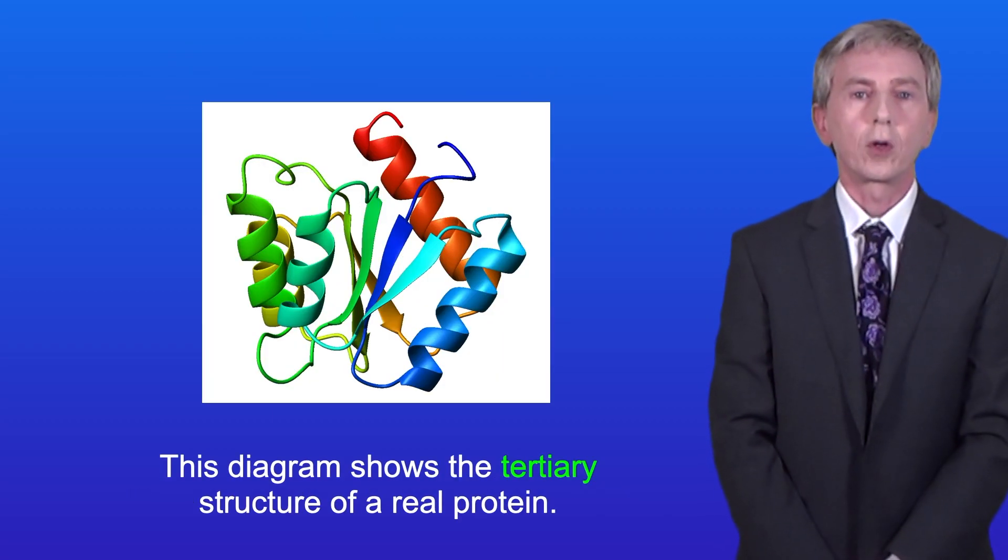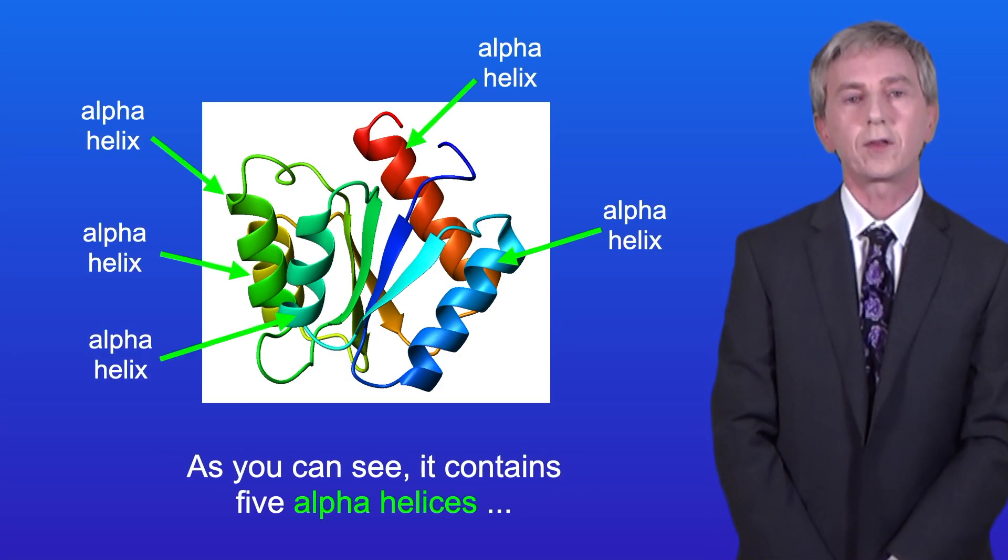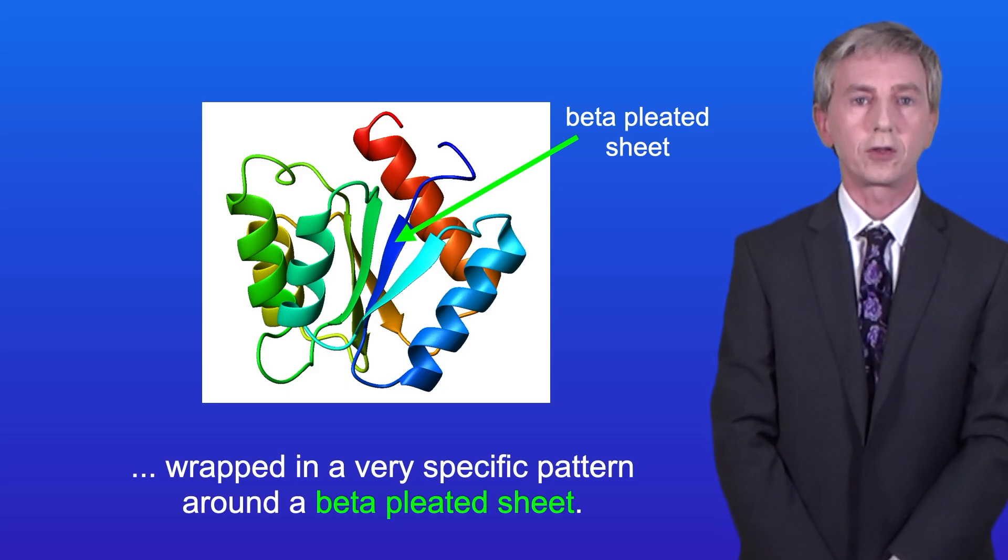This diagram shows the tertiary structure of a real protein. As you can see, it contains five alpha helices wrapped in a very specific pattern around a beta pleated sheet.